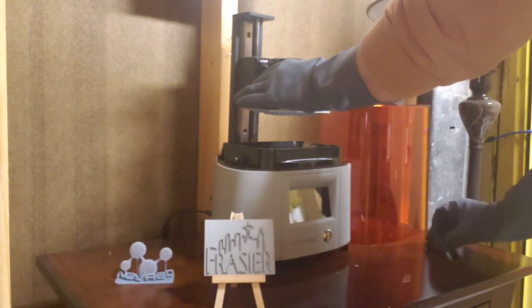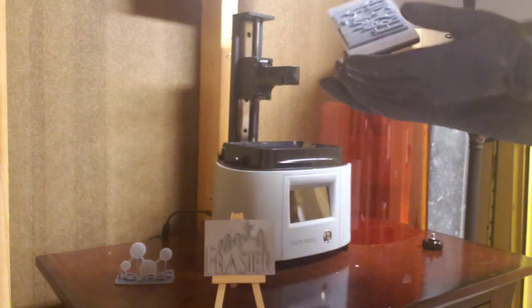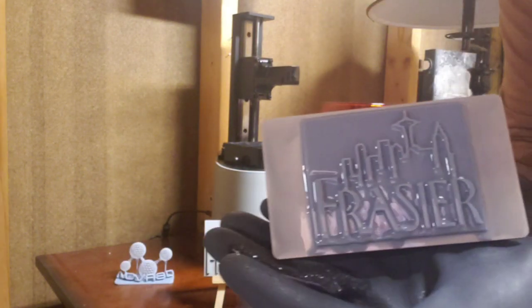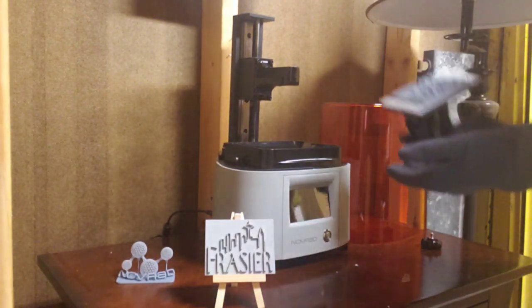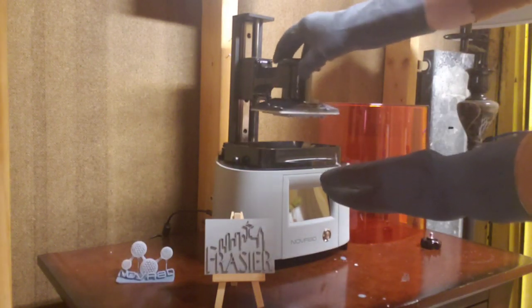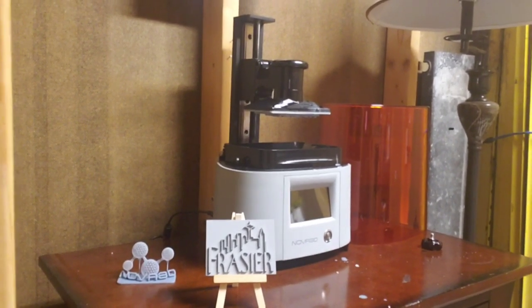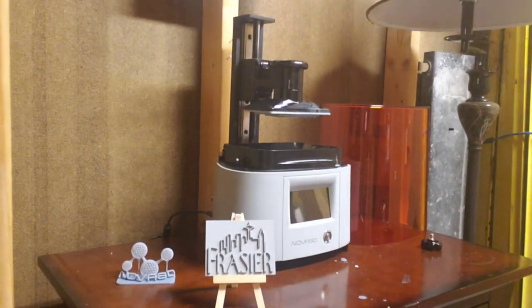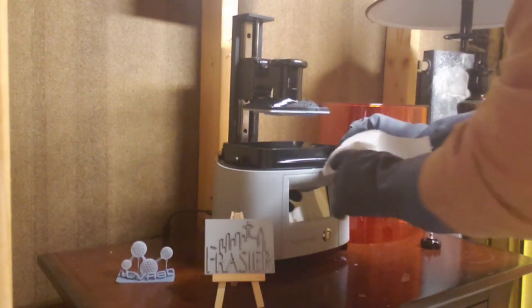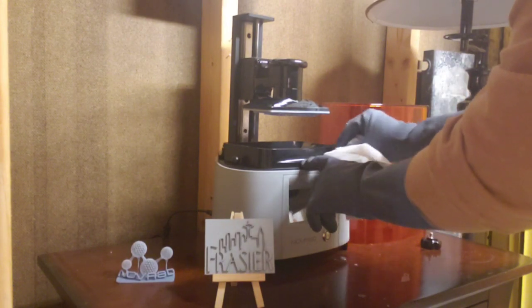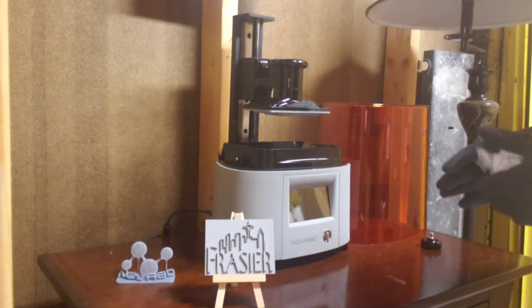This thing just unscrews off the top. Slides right off. And there you go. That's it. Now there is some post-processing to do. I'm going to slide that back in there for now. And actually what I'm going to do, get a couple of paper towels ready. Because the resin that was uncured is still a little wet and drippy. But it cleans up easy with a paper towel. No big deal.